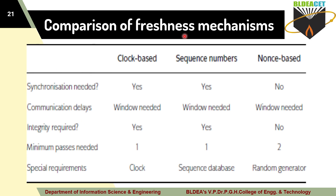Now let's see a comparison of freshness mechanisms. There are three types: clock-based, sequence numbers, and nonce-based. In clock-based, freshness is based on the hardware clock. In sequence-number-based, freshness is based on sequence numbers like 1, 2, 3, 4. The nonce-based is the third type, which depends on a random number that is generated uniquely only once.